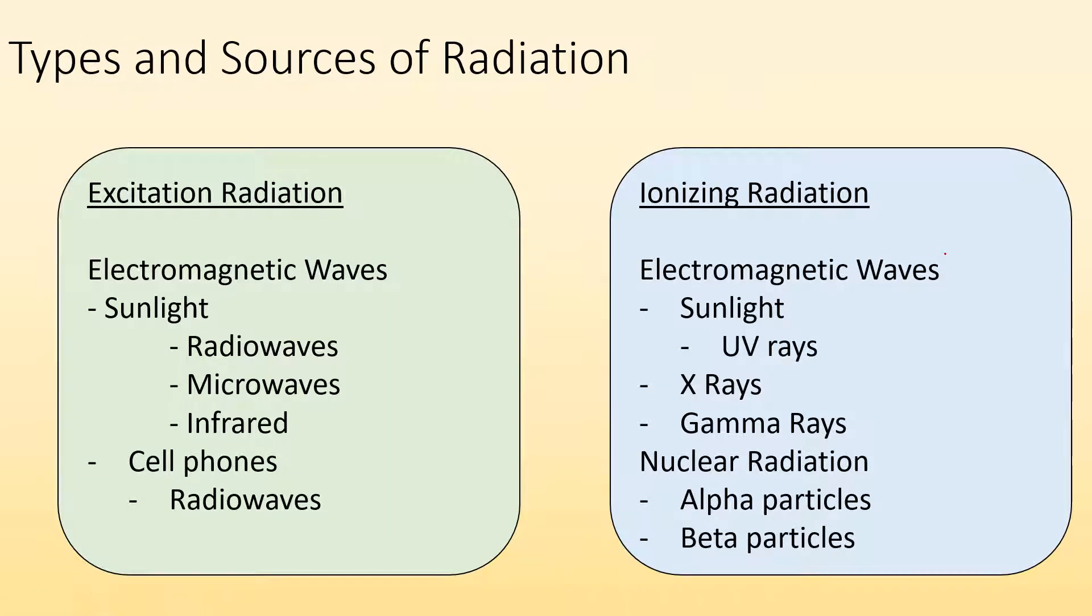So types and sources of radiation. For excitation radiation, you're exposed to that all the time. You got sunlight that has radio waves, visible light, microwaves, infrared. Cell phones give off radio waves. Those are all types of excitation radiation. Ionization radiation, you're also exposed to all the time. Sunlight with the stronger UV rays can cause ionization. X-rays, gamma rays, there's also nuclear radiation like alpha particles and beta particles. All those would be examples of ionization radiation.